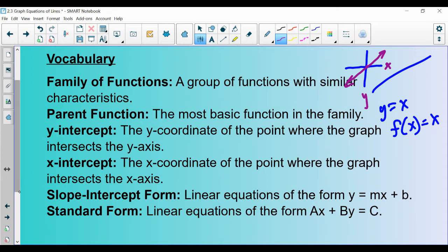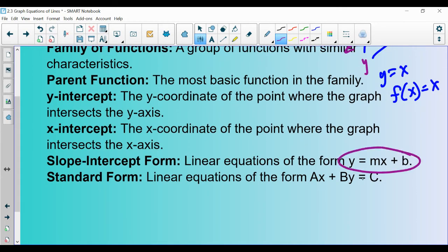This should all be a review, but slope-intercept form is y=mx+b. m is your slope and b is your y-intercept. And then standard form is Ax+By=C. You don't know it as well as slope-intercept form. You guys spent a majority of your time in Algebra 1 in slope-intercept form. We are going to be talking about graphing from slope-intercept form and from standard form in this lecture.